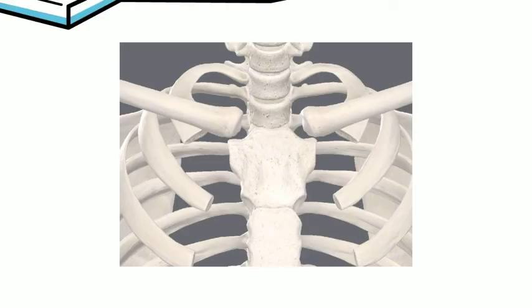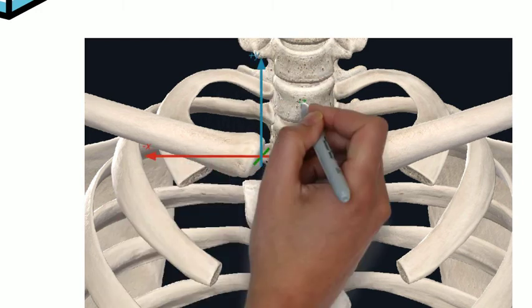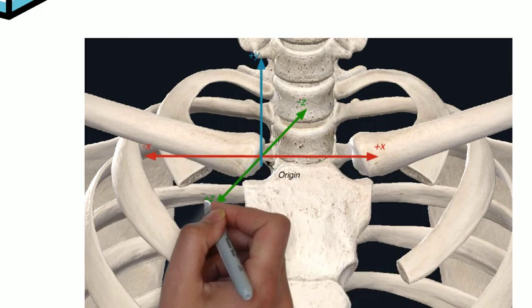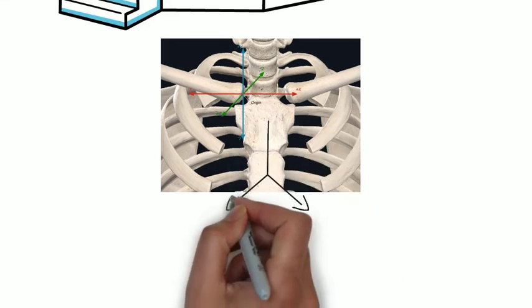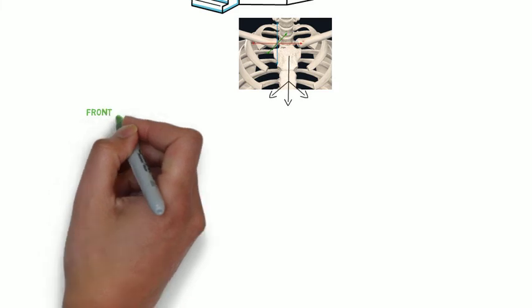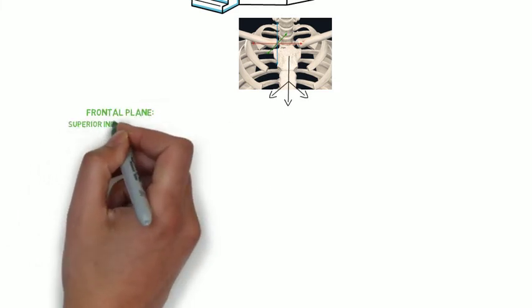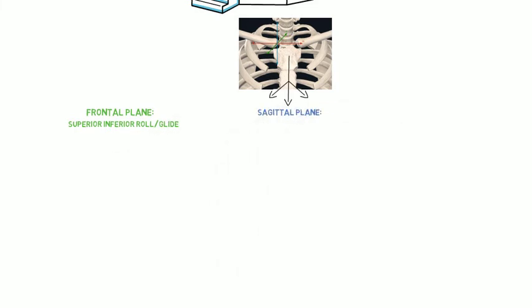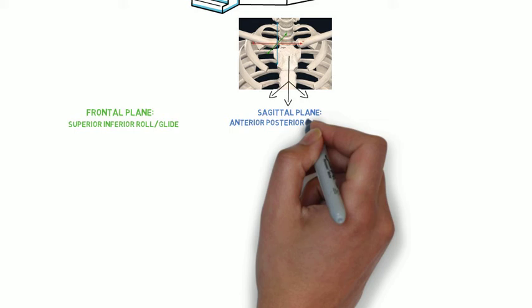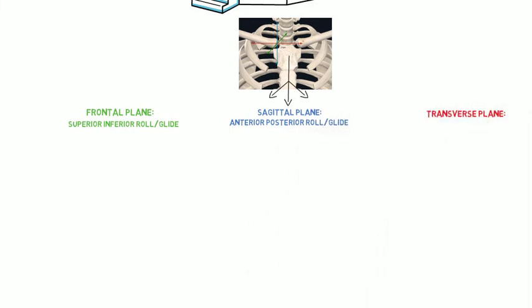So let's get to the arthrokinematics of the sternoclavicular joint. Prior to understanding the movement that occurs at the joint, we first need to identify the cardinal planes that the joint is situated in. There are three planes that dictate the sternoclavicular joint arthrokinematics. The frontal plane, in which the clavicle elevates and depresses, the sagittal plane, where the clavicle moves in anterior and posterior directions, and the transverse plane, where the clavicle spins around its longitudinal axis.